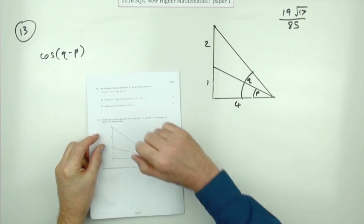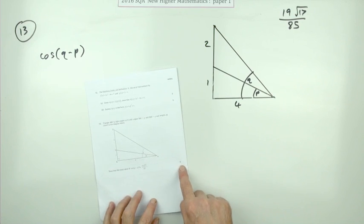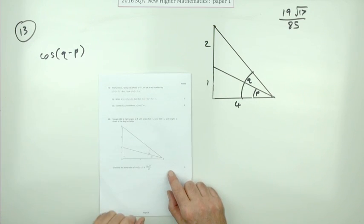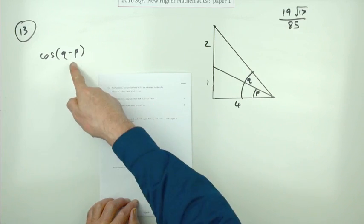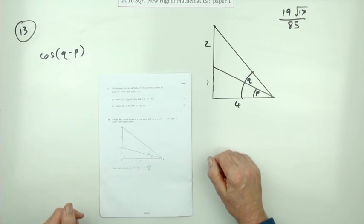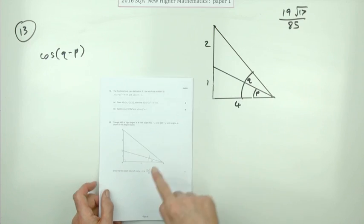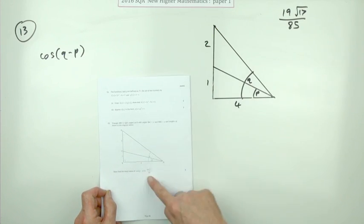Number 13 from Paper 1 of the 2016 Higher Maths. We've got five marks for your addition formula. You've got the standard question where you've got two triangles and it asks for the sine or cosine of some combination of those angles. Only this time it tells you the answer and wants you to demonstrate you get this as the answer for cos(q - p).